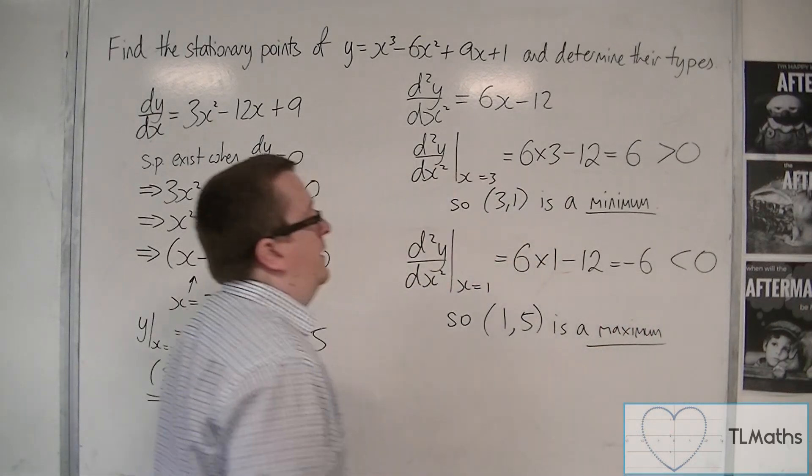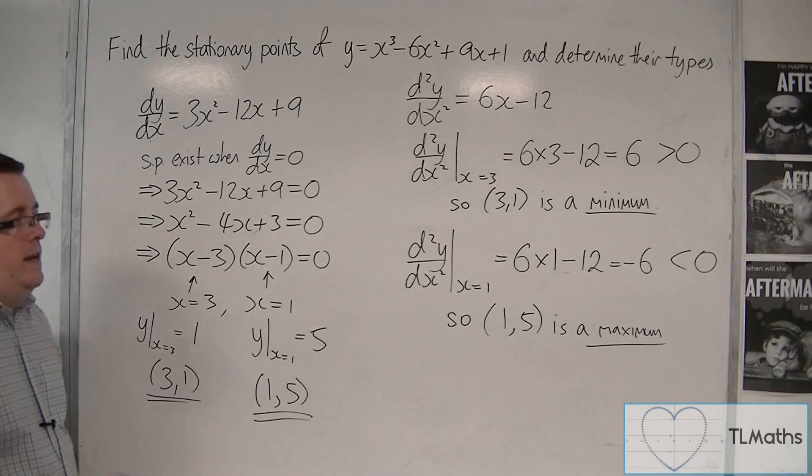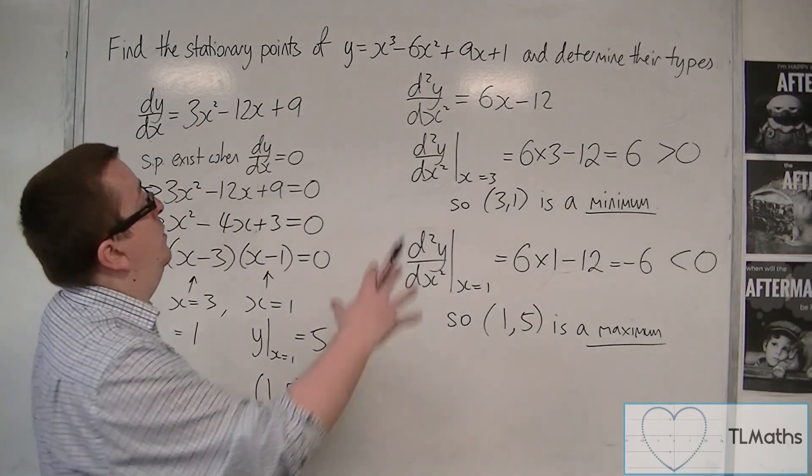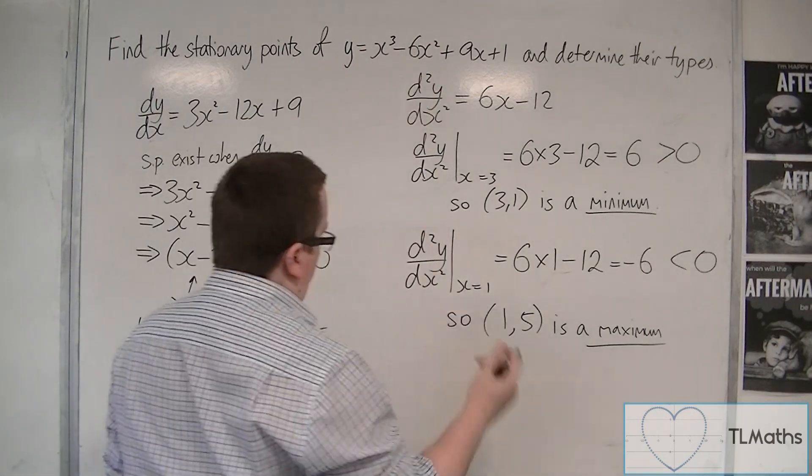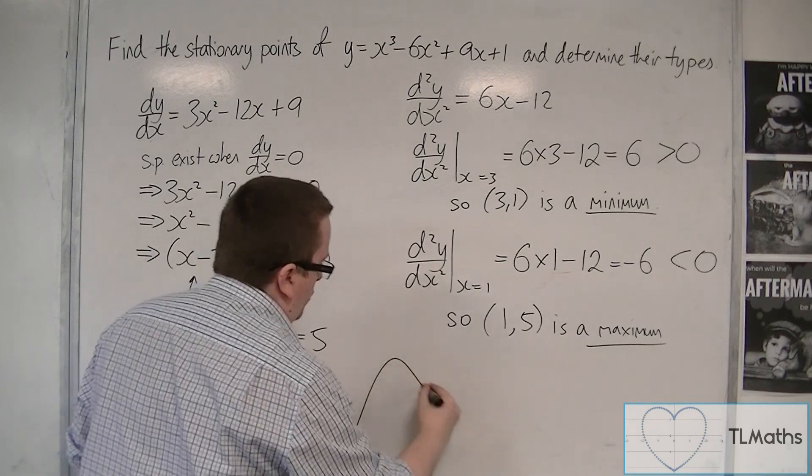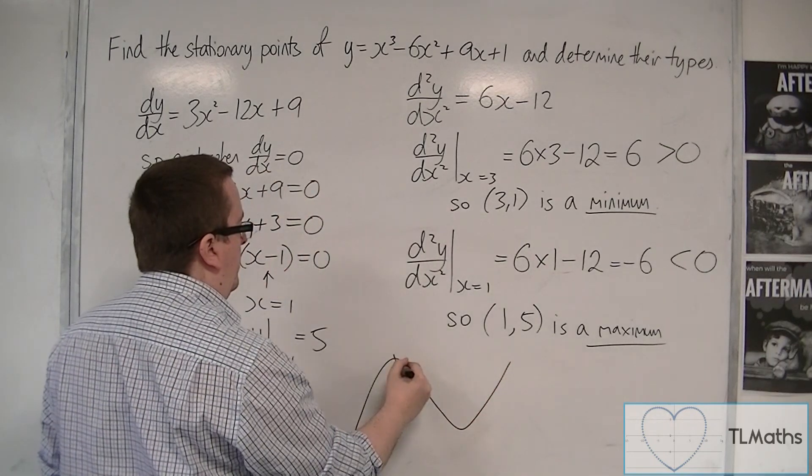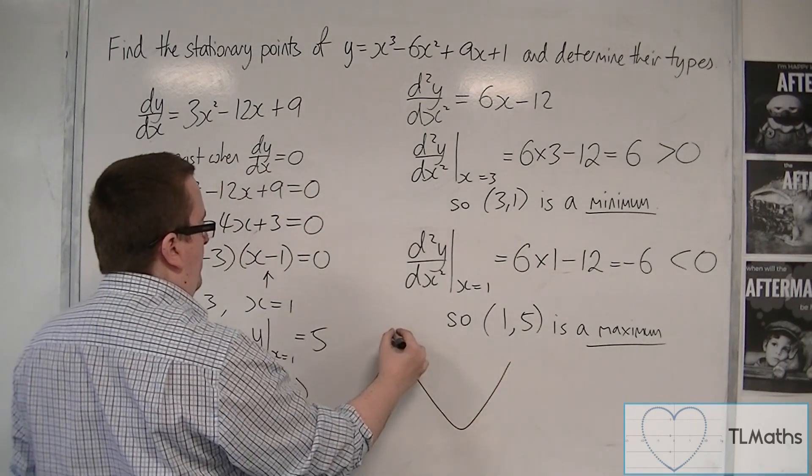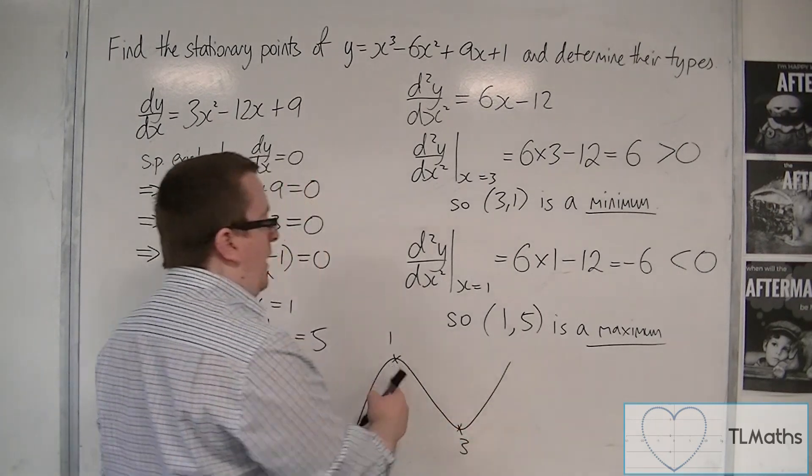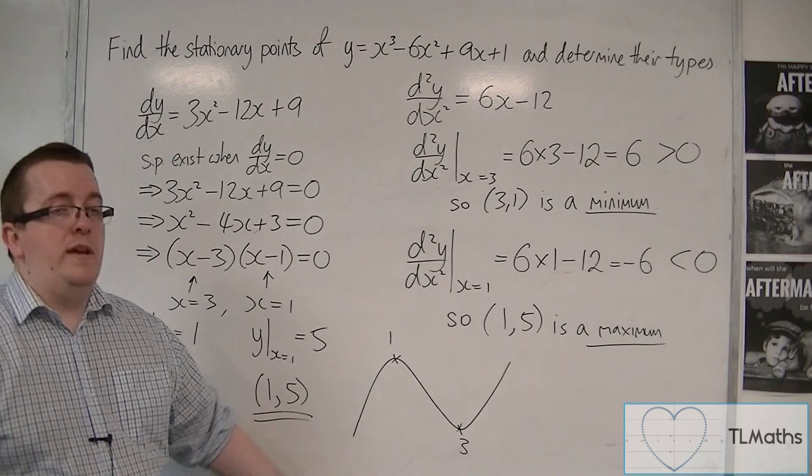Now, you may be asking, why would we do this when we actually know that that's a cubic, there are two stationary points, the number in front of the x³ is positive, so you could just sketch the curve and identify that being 1, that being 3, and so clearly 1 is a maximum and 3 is a minimum.